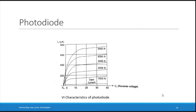The VI characteristics of a photo diode are in the third quadrant — both current and voltage are negative (reverse bias). With no light, the dark current flows. As the intensity of light increases — 1000, 2000, 3000 foot-candles — the reverse current increases, becoming approximately linear after a certain voltage.